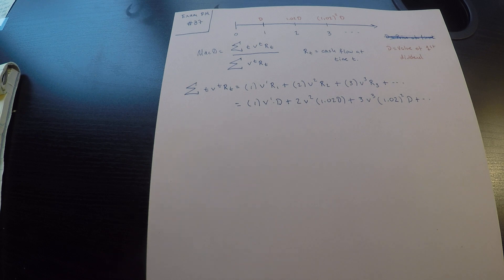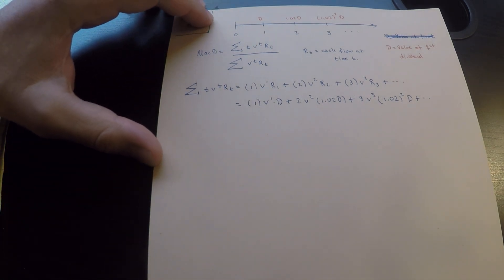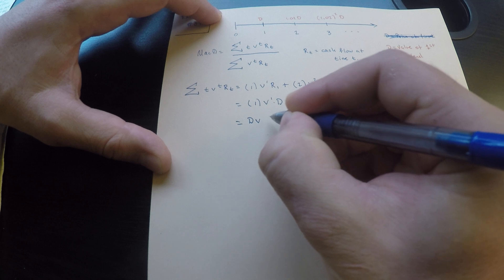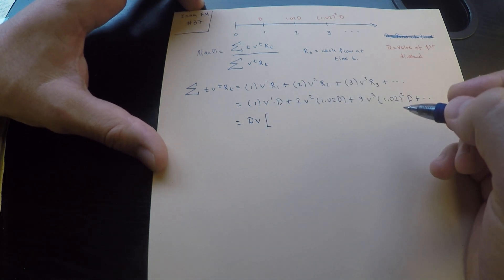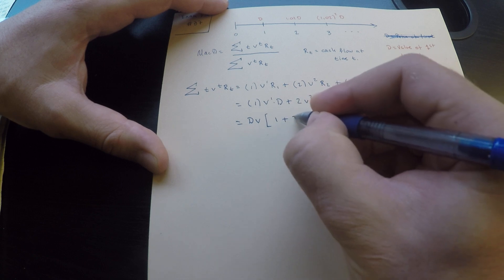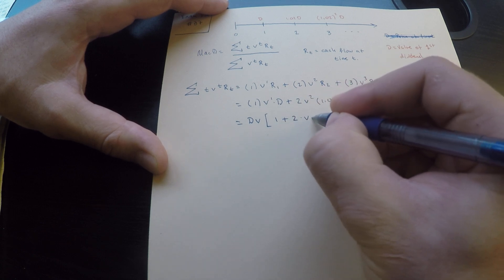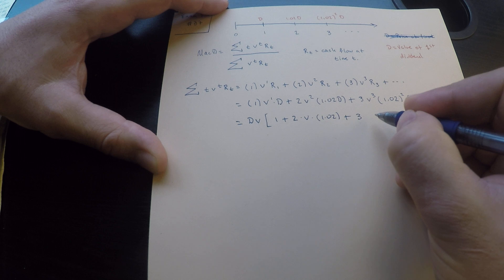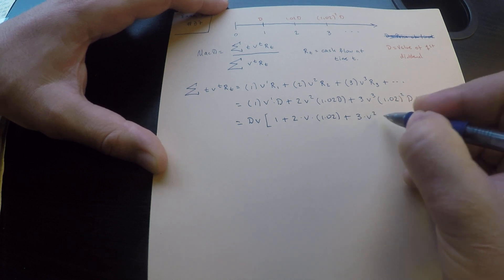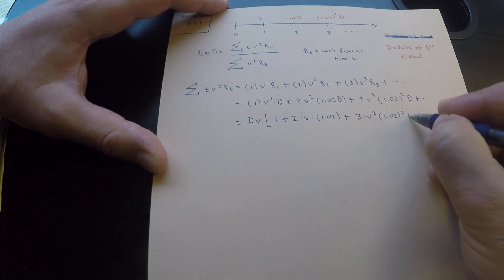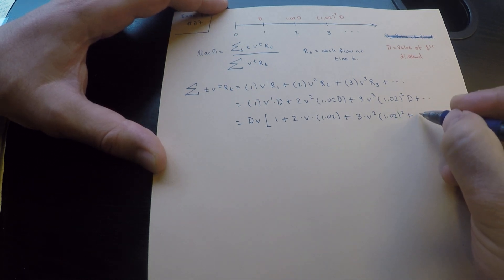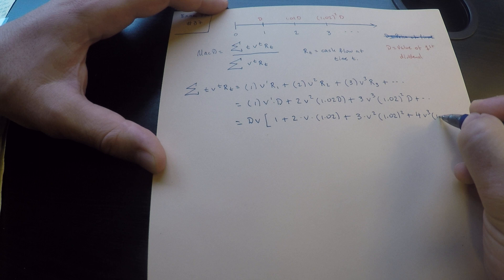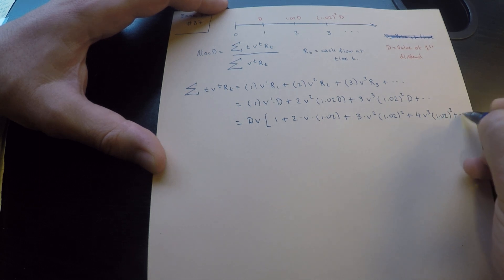Let's factor out D and also a V, giving DV times the quantity: 1 plus 2·V·1.02 plus 3·V²·1.02² plus 4·V³·1.02³, and so on. I factored out a V so that the powers of V and the powers of 1.02 coincide within each term.